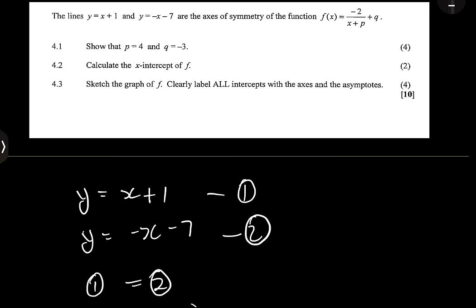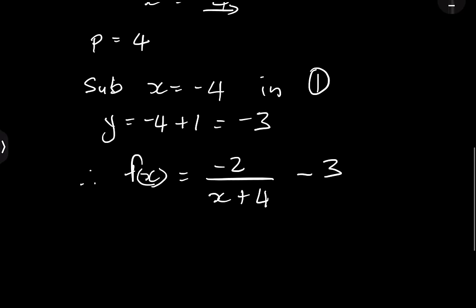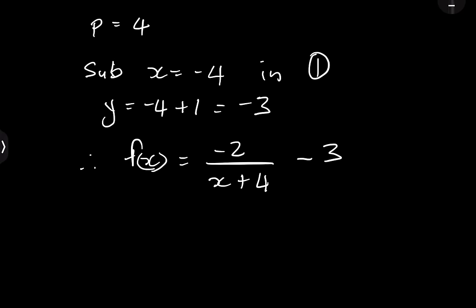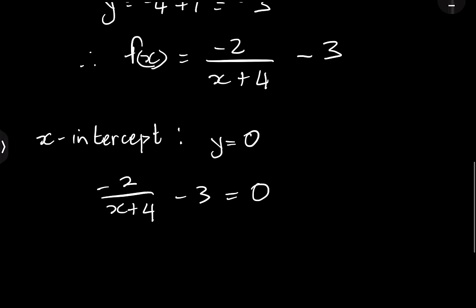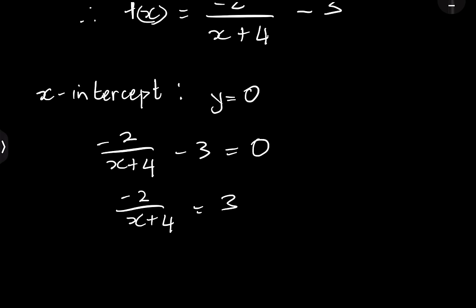Now they say calculate the x-intercept of f. At the x-intercept, y = 0. So we set -2 / (x + 4) - 3 = 0, which gives -2 / (x + 4) = 3. Taking three to the other side it becomes positive, and we cross multiply: treating 3 as 3/1, we get -2 × 1 = -2 on one side, and on the other side 3 × (x + 4).